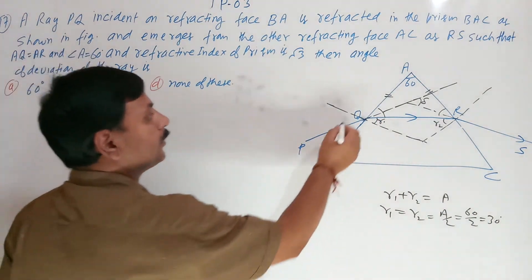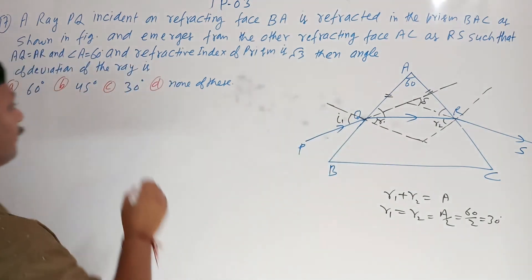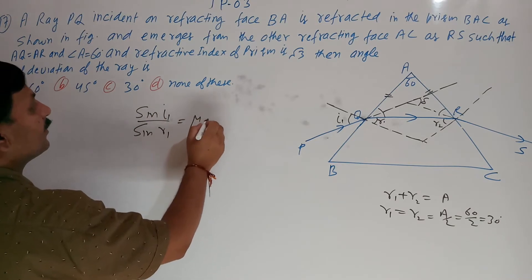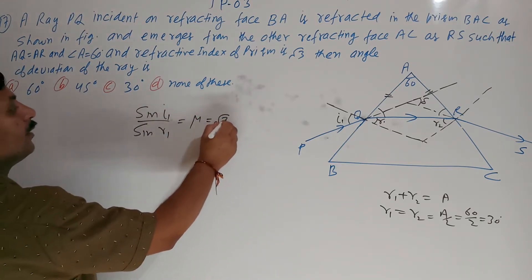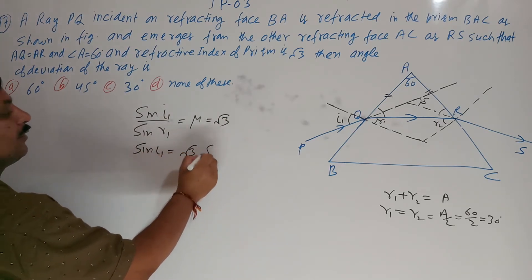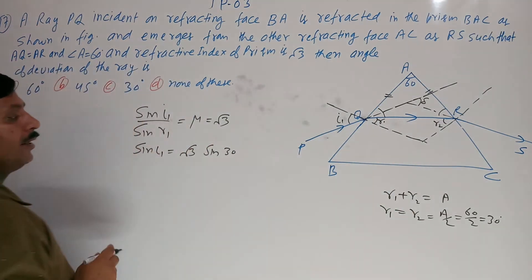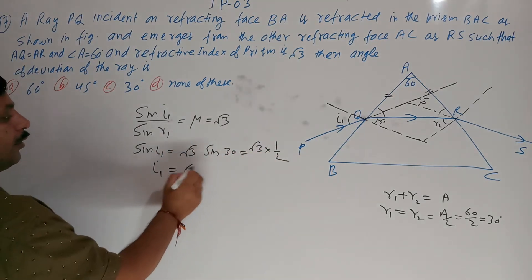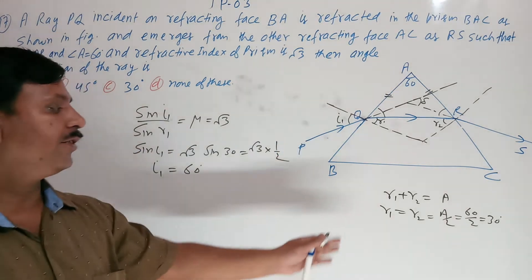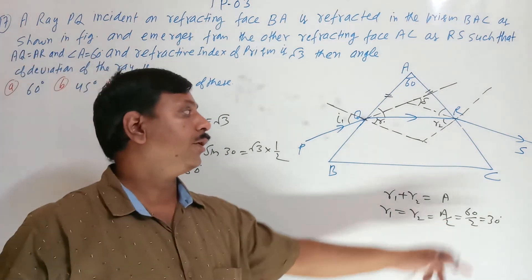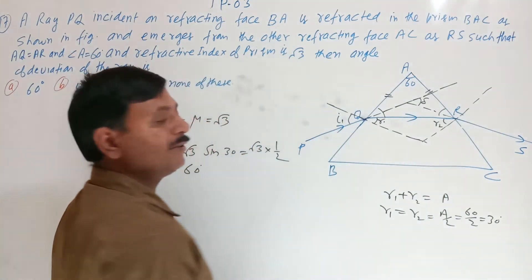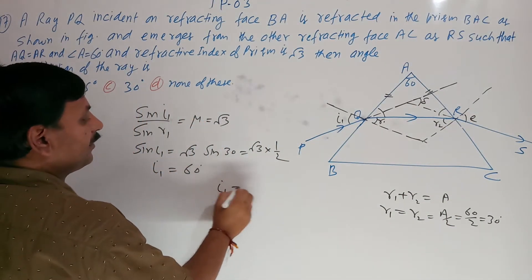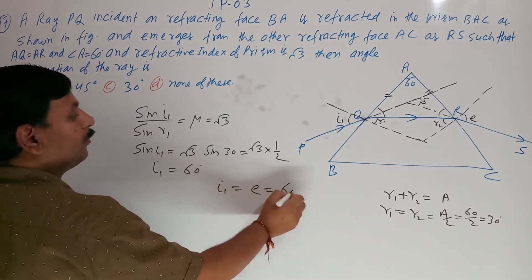So R1 is 30 degrees. For the angle of incidence I1: sin(I1) / sin(R1) equals the refractive index, which is root 3. So sin(I1) equals root 3 times sin(30°) equals root 3 times 1/2 equals root 3 / 2. Therefore I1 equals 60 degrees. Since R1 equals R2 equals 30°, this is the minimum deviation condition, meaning QR is parallel to BC, and angle of incidence equals angle of emergence equals 60 degrees.